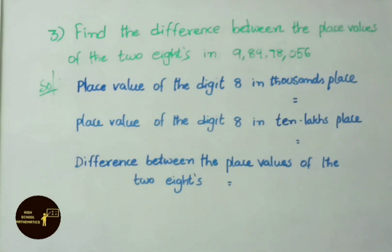See the third sum now. Find the difference between the place values of the two eights in 9 crore, 89 lakh, 78 thousand, 56. Let us see the solution. Place value of the eight in thousands place is 8,000.